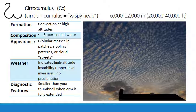Cirrocumulus clouds are commonly associated with instability — convection happening at very high altitude — telling you there's a warm layer and an upper-level inversion up there. While these clouds don't ordinarily bring precipitation that reaches the ground, they probably warn of an impending stormy weather pattern, particularly if you've noted the presence of cirrus clouds during a previous observation.